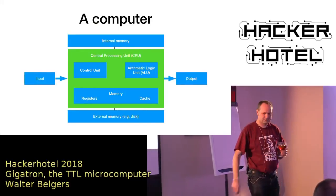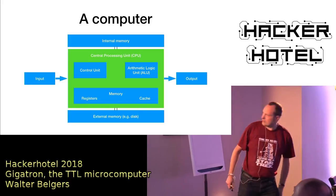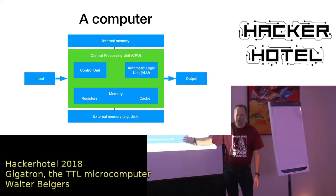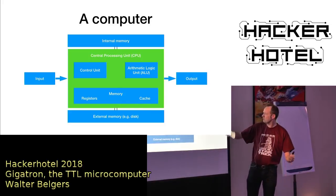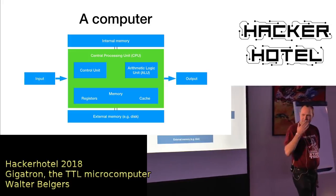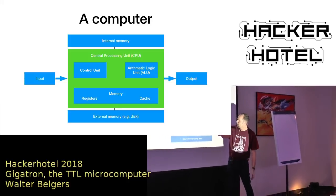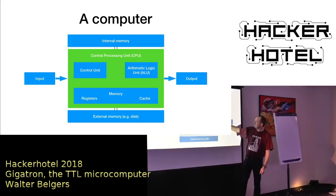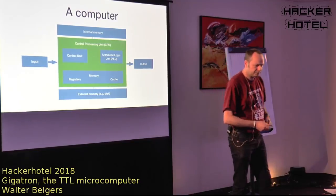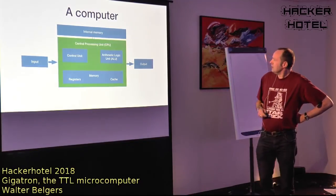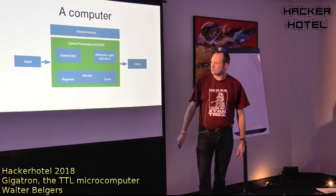If you have any questions, just shout them out. Let's look at a typical computer. Normally you have internal memory, external memory like disks, some kind of input like a keyboard, output like a screen, and the central processing unit or CPU. The CPU can be subdivided into internal CPU-accessible memory, an arithmetic logic unit that can do calculations, and the control unit which controls what happens within the CPU. We did away with disks and complicated external memory right away.